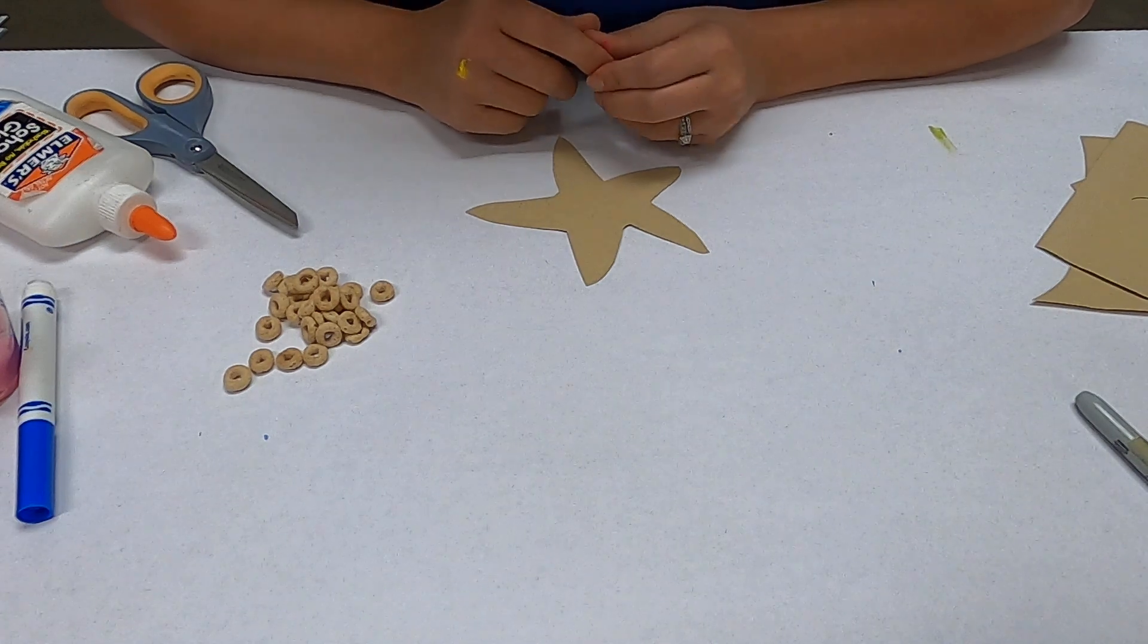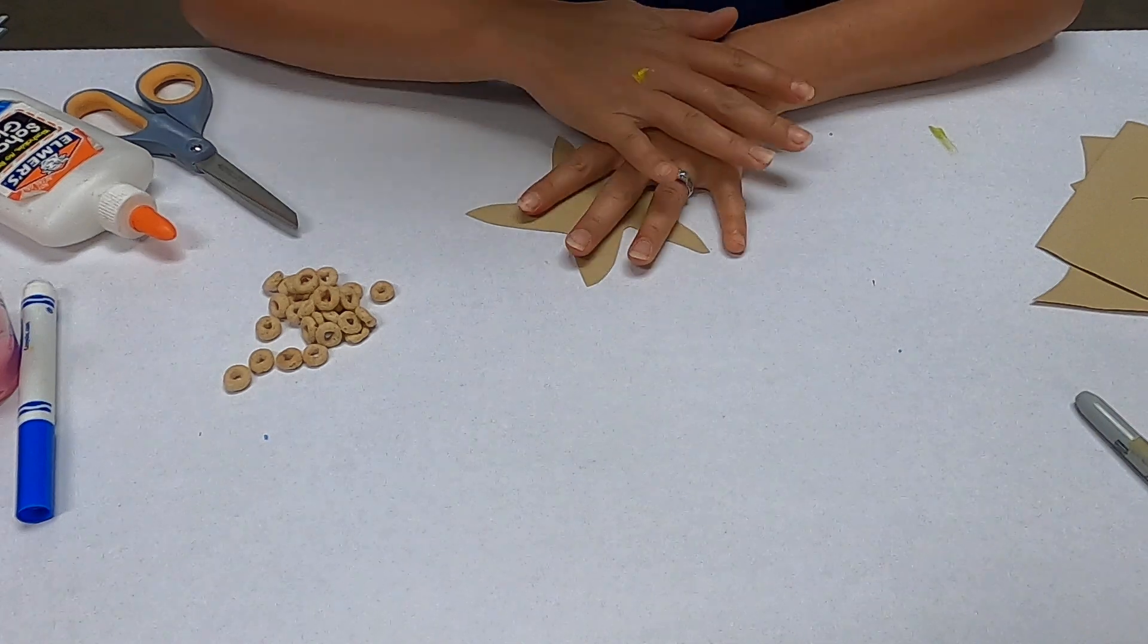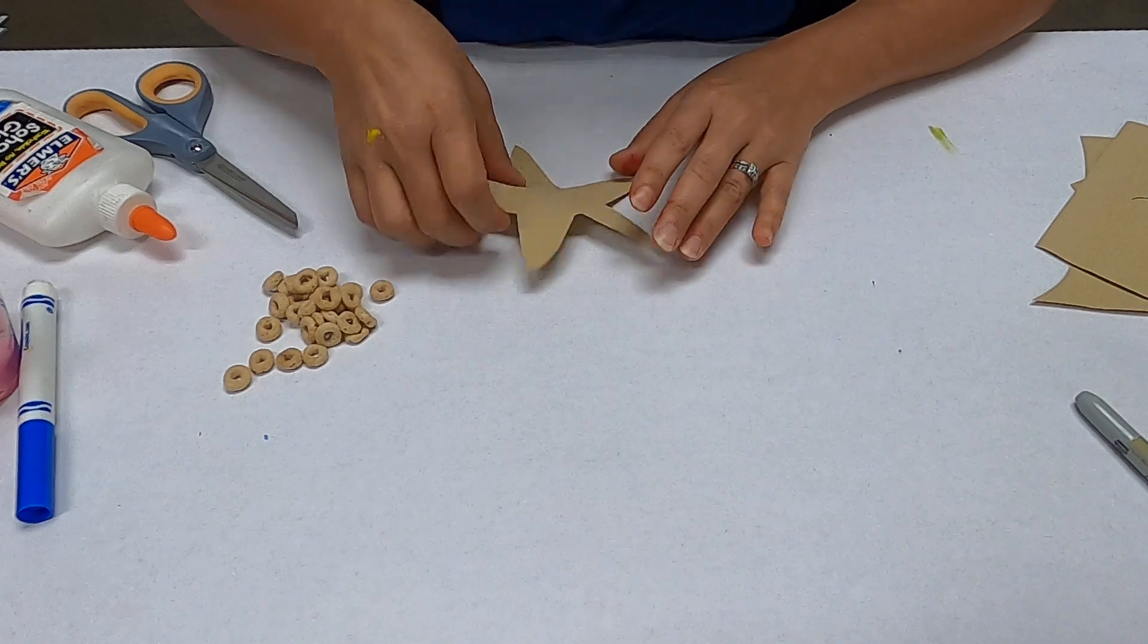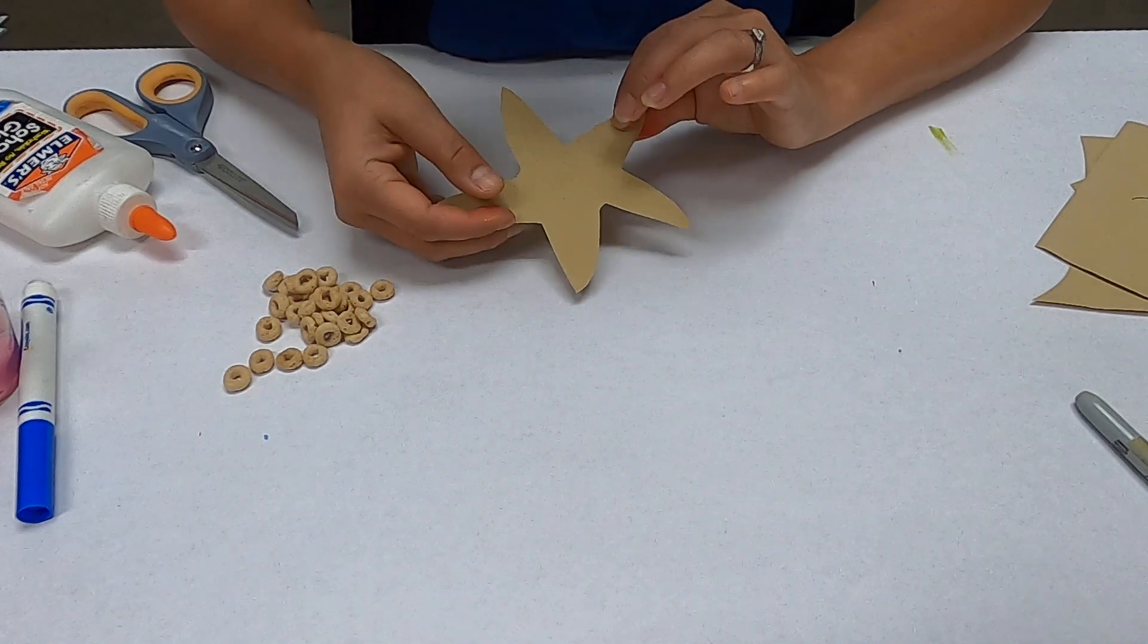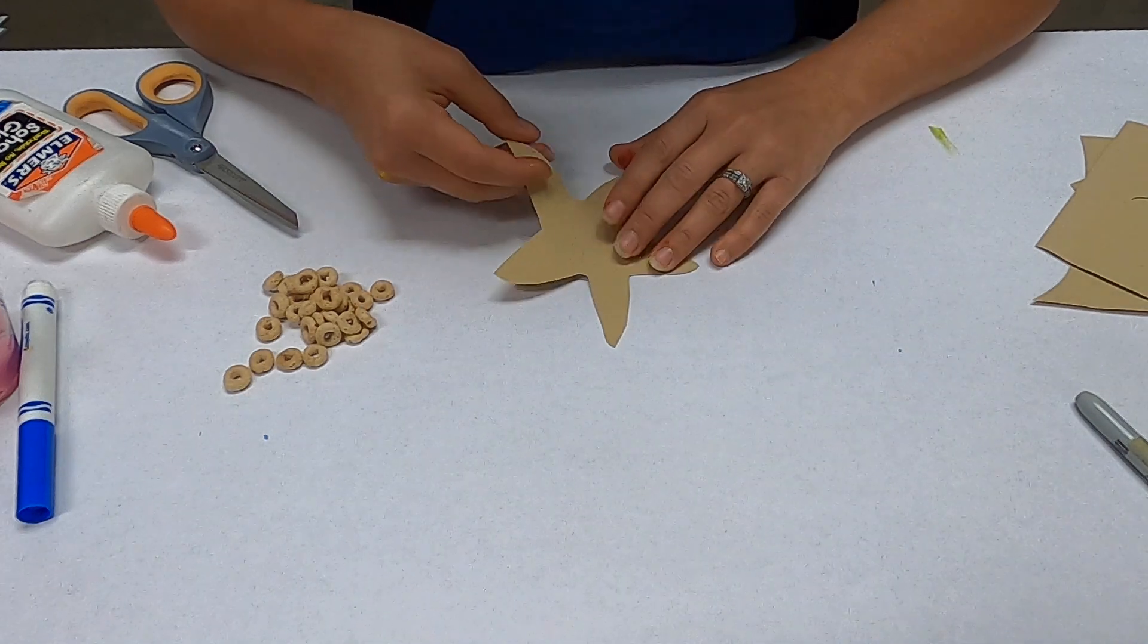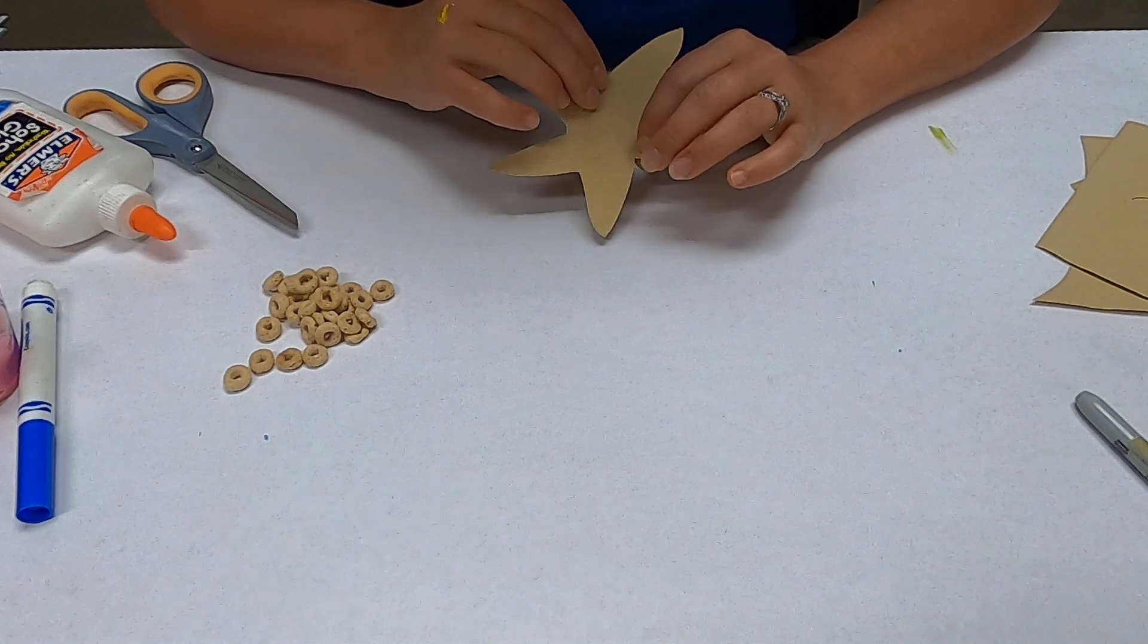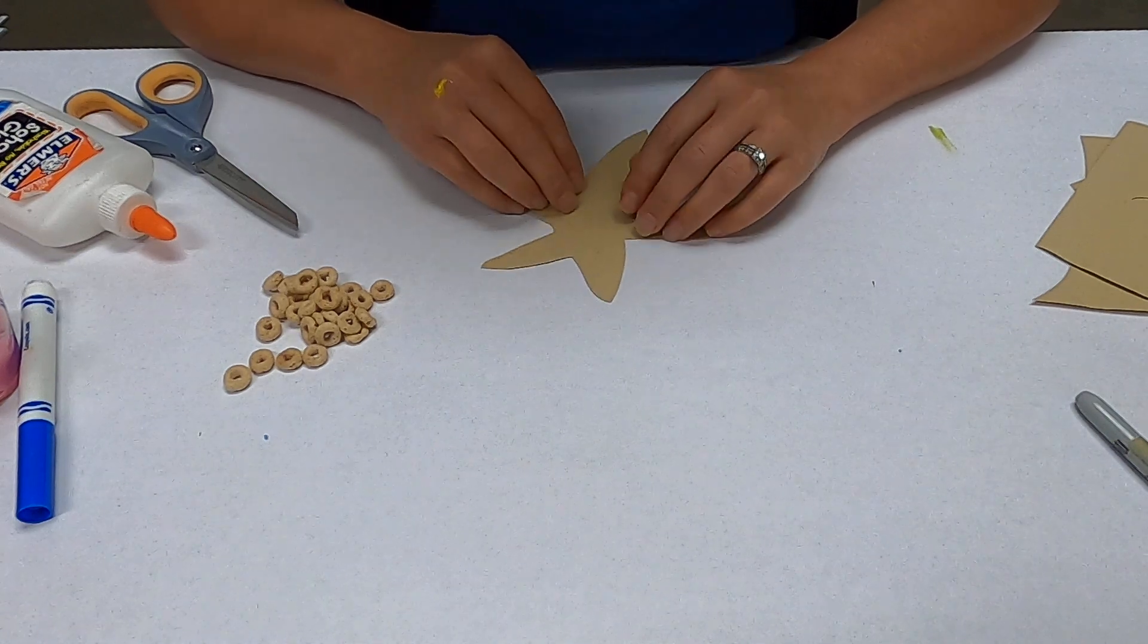So in part one video we did a handprint hermit crab and a sandpaper starfish. In this one we're going to do another sandpaper starfish but a different way and then we'll do a different starfish after that.